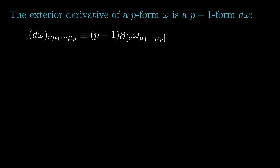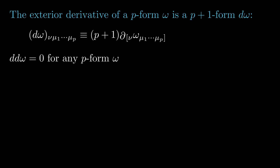Note that the partial derivative operator in the definition of the exterior derivative can be replaced by any derivative operator. For example, given a metric, partial-mu can be replaced by the covariant derivative del-mu. You can easily check that the extra Christoffel symbol terms contained in the covariant derivative must vanish due to the anti-symmetrization on lower indices. Finally, observe that the exterior derivative acting twice on any p-form always gives zero — this is known as the Poincaré Lemma.